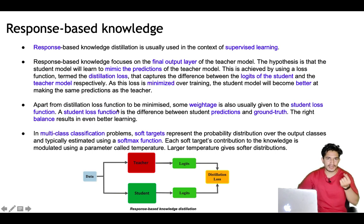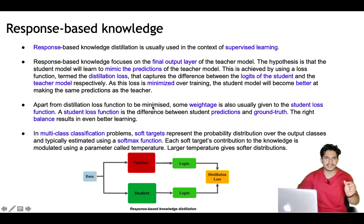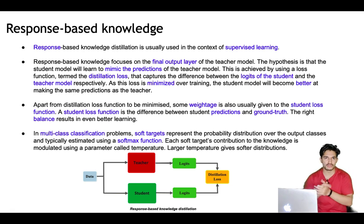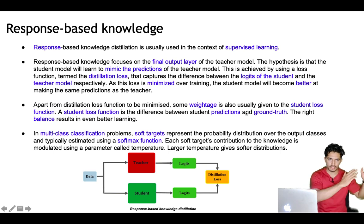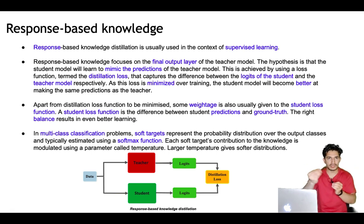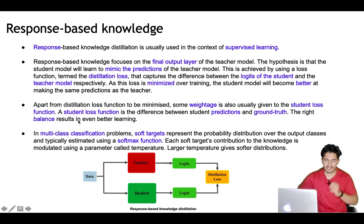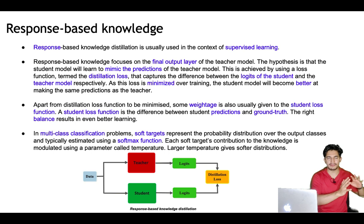One more clever trick is used: apart from the distillation loss, some weightage — say 90% — is given to the distillation loss, and some smaller weightage is also given to the student loss. The student loss function is the difference between student predictions and the ground truth. The right balance helps in even better learning, but usually 80–90% large weightage is given to the distillation loss.